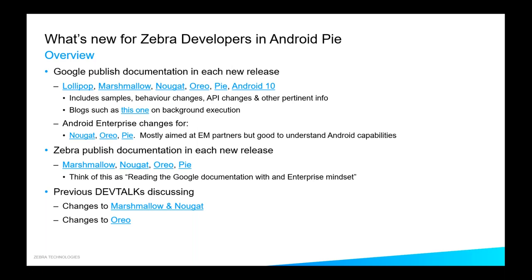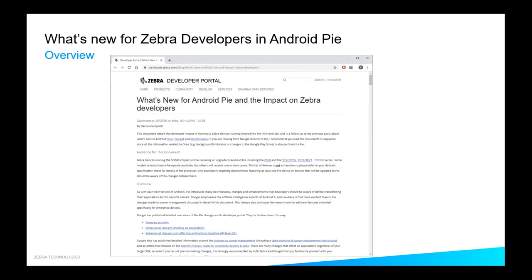Everything I'm saying here does not replace any of the advice which Google give. Google have some really great documentation that they put out for each version of Android they release, and they also have some really great blogs. I encourage you to check those out to really understand the fundamentals of the Android operating system. Because although we build on top of it with our MX layer and our additional functionality, we're not rewriting any of the core Android stuff. I also publish every year a document essentially summarizing everything I'm going through, the things to be aware of in the different versions. I recently published my version on Pie — if you want a deeper dive, check out developer.zebra.com and type 'what's new in Android Pie' into the search field.